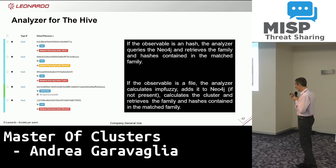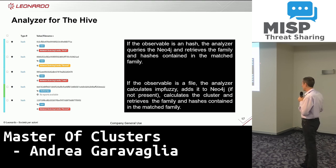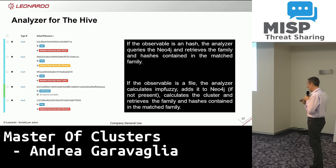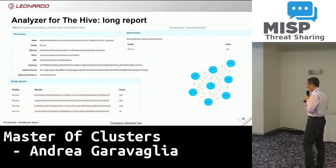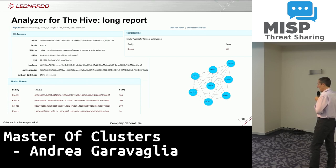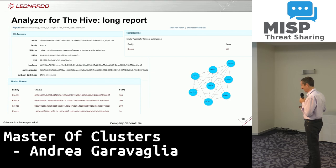We created an analyzer for TheHive, so it's possible to load a hash or also a file. Loading the file is very interesting; if you load just the hash, it's like doing a simple query into the Neo4j database and retrieving the cluster that the malware belongs to. This is the TheHive report — you can see the hashes of the loaded sample, the top files that are similar with their matching scores, and the top matching family. We reproduced the Neo4j graph style into TheHive using a JavaScript library. It was quite hard to understand the documentation, but we had fun.